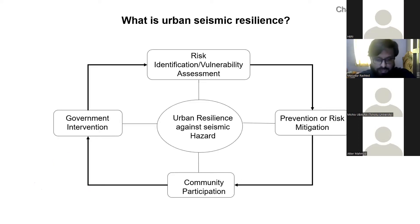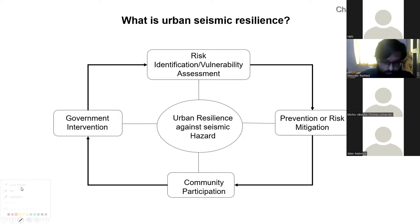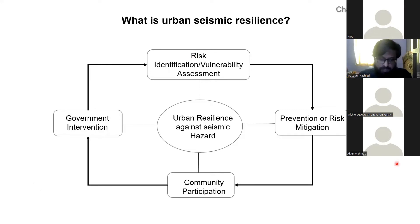This simplified diagram illustrates how to obtain urban resilience against seismic hazard. First, we need to identify the risk or assess the vulnerability of the area. Second, we need to take preventive measures to mitigate the risk. Third, community participation is very much required since the frequency of earthquake in Bangladesh is very low. And finally, government intervention is needed to execute the complex job in an efficient way.